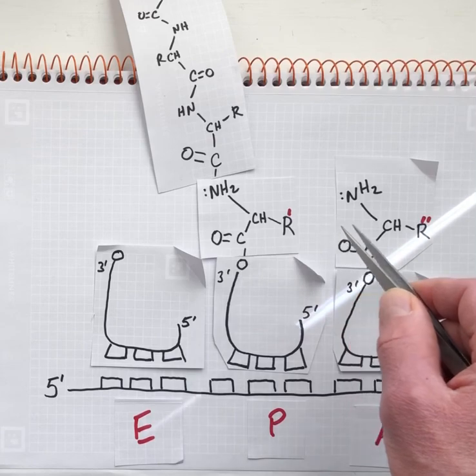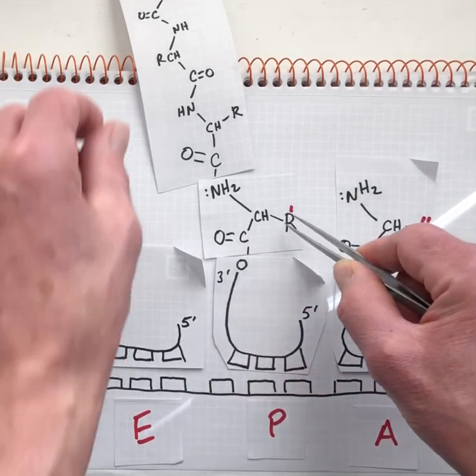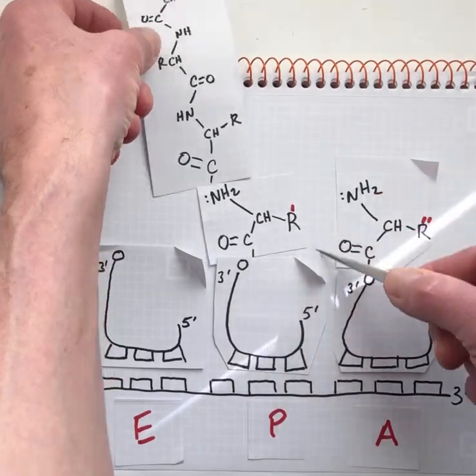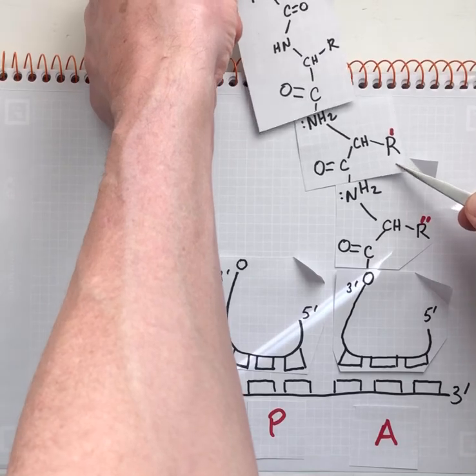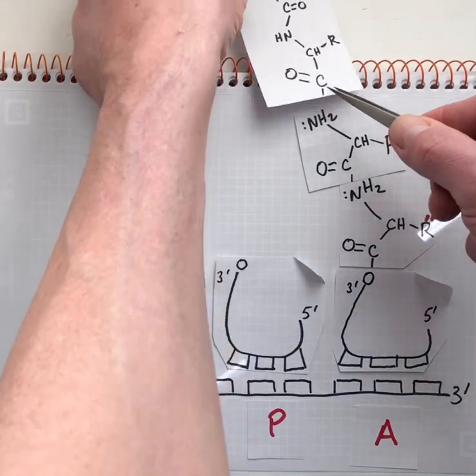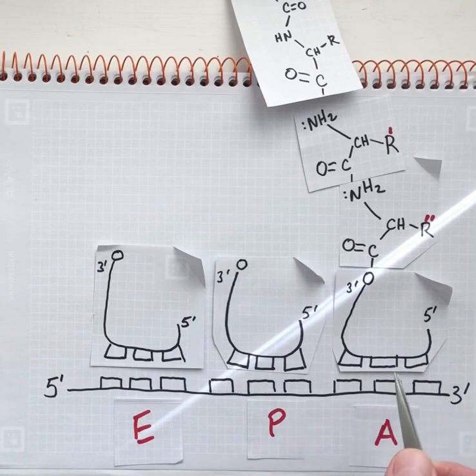We undergo another nucleophilic attack from this amine to this carbonyl center, moving the whole polypeptide as a unit onto the next amino acid. We've made the chain longer by two units through these two peptidyl transfer reactions.